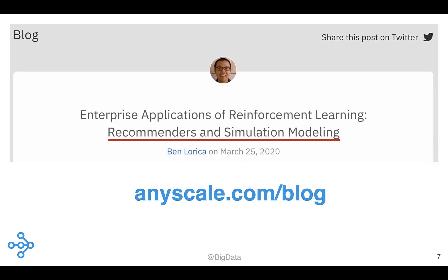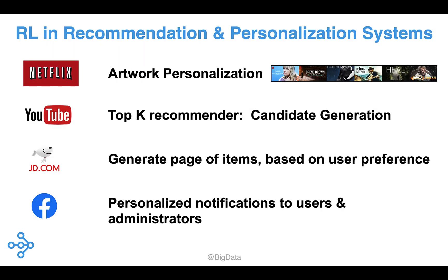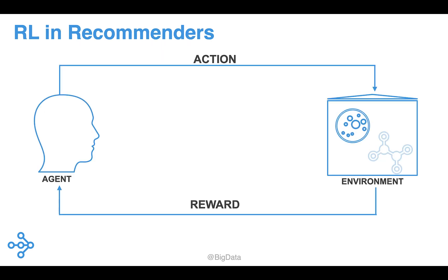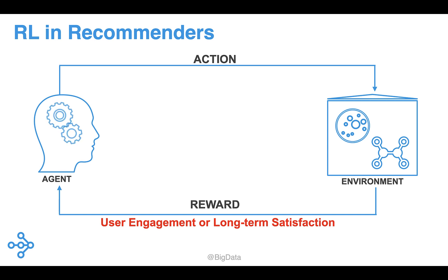There are many business problems and applications that can be cast as sequential decision-making. And for this set of problems, RL is starting to be evaluated alongside more familiar approaches. Several tech companies have given talks or published articles describing how they're beginning to incorporate RL into existing recommenders or personalization systems. The idea is to utilize real-time user feedback and behavior by building RL agents that optimize desired reward functions, such as user engagement or long-term satisfaction.